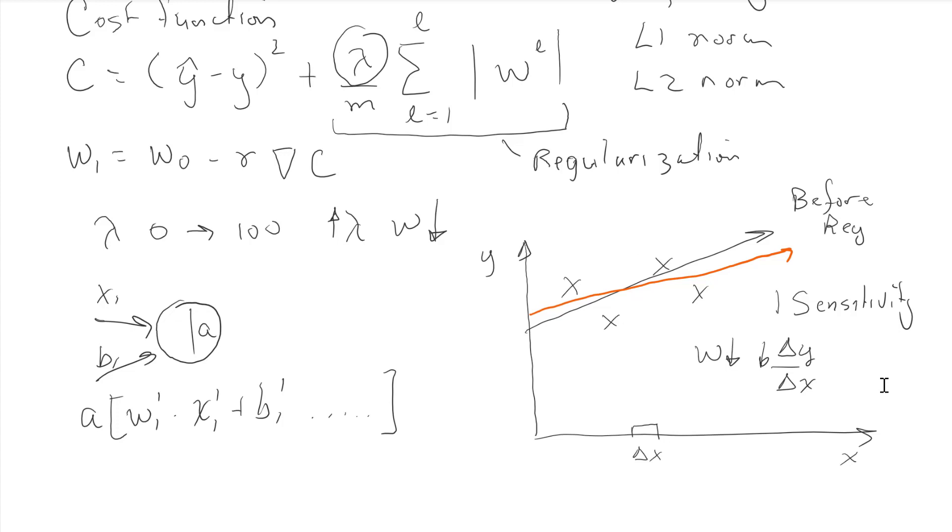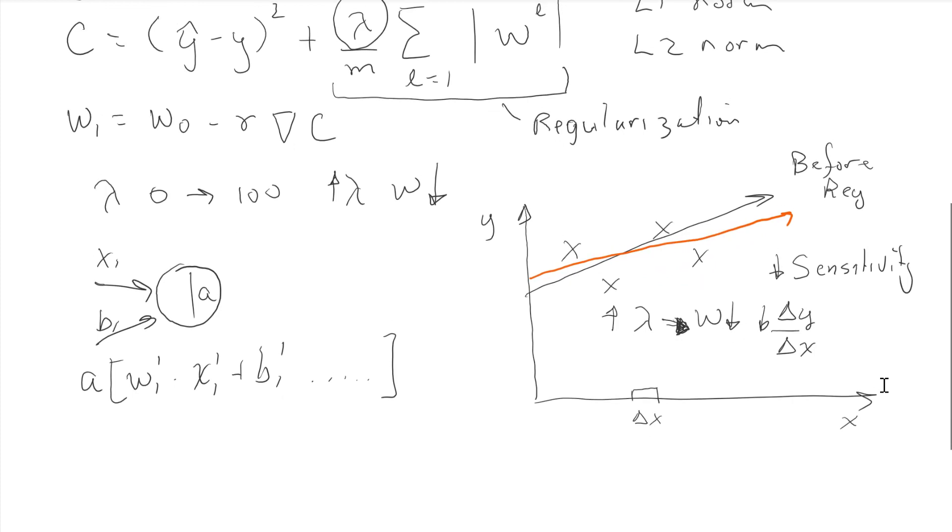We've lowered the sensitivity by using a high lambda. High lambda results in lower w and lower sensitivity. A conceptual way of thinking about regularization: it lowers the weights and makes the model less sensitive. If my model is less sensitive, it is less likely to overfit.